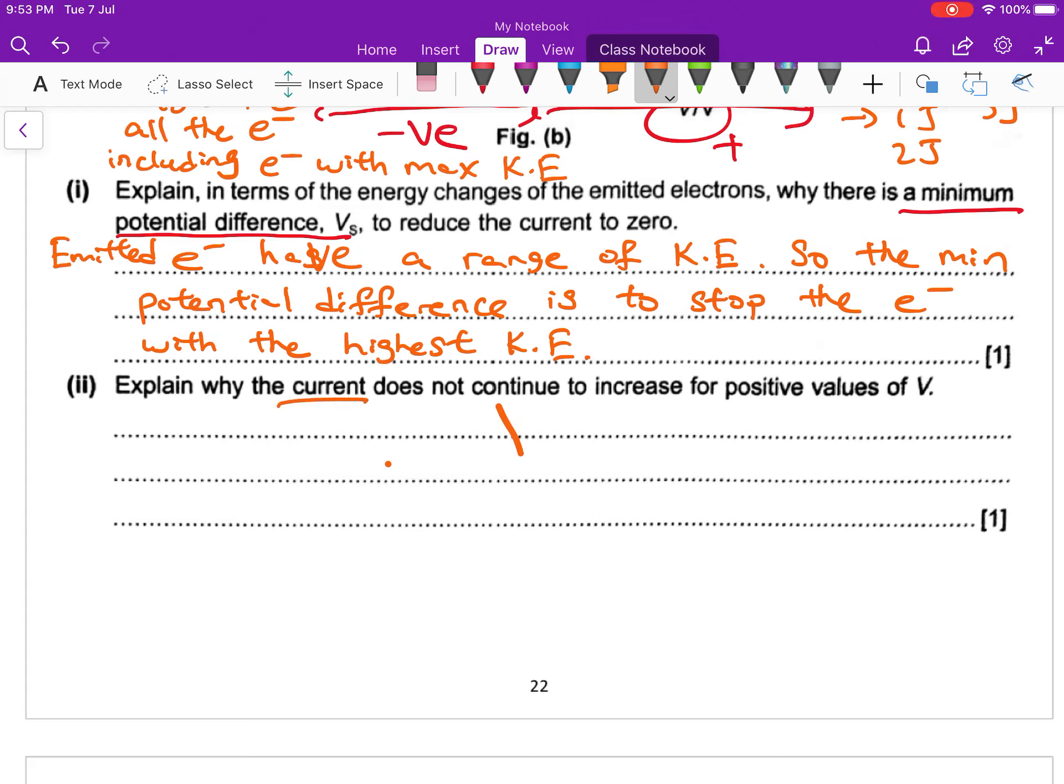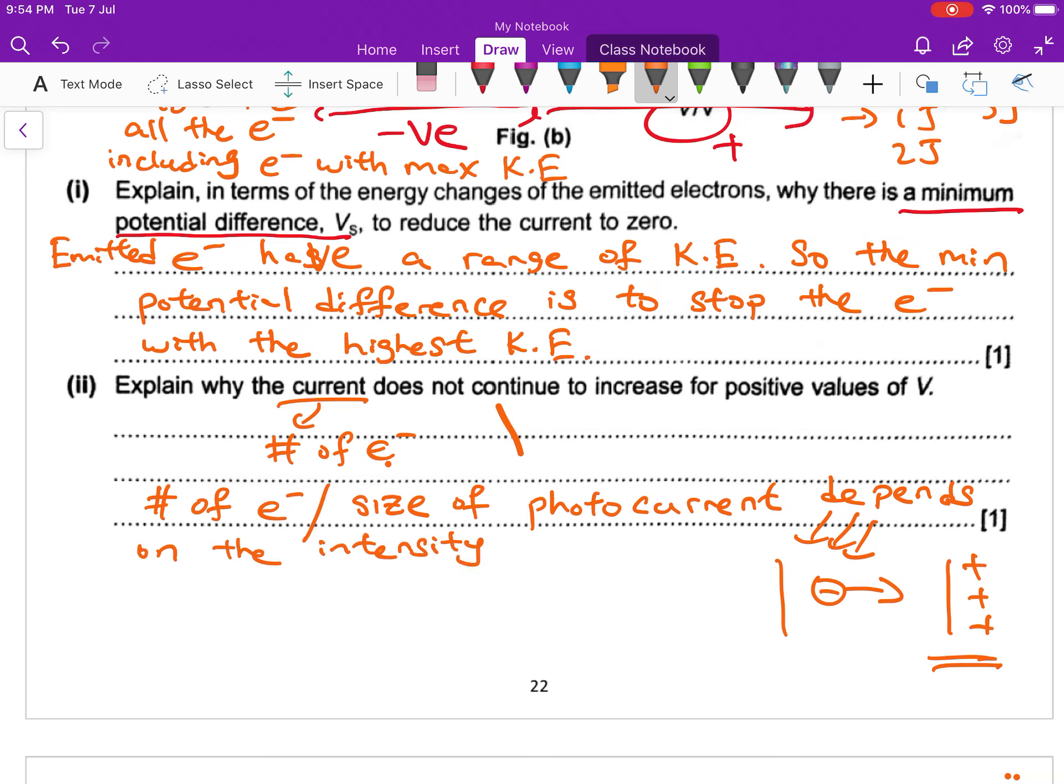Part B(ii): Explain why the current does not continue to increase for positive values of V. Our current is the number of electrons that can reach our plate. Let's say it's positive, so our electron can accelerate towards our collector. But why as I increase the positive voltage, the number of electrons collected does not increase? Because the number of electrons, or size of the photocurrent, depends on the intensity of light. Number of electrons or size of the photocurrent depends on the intensity of light.